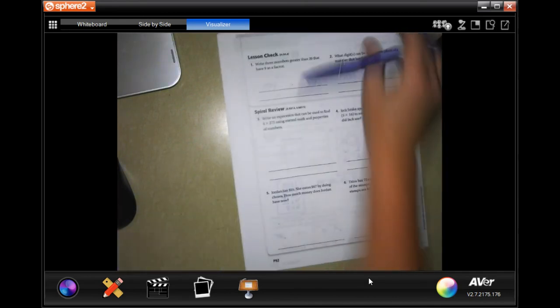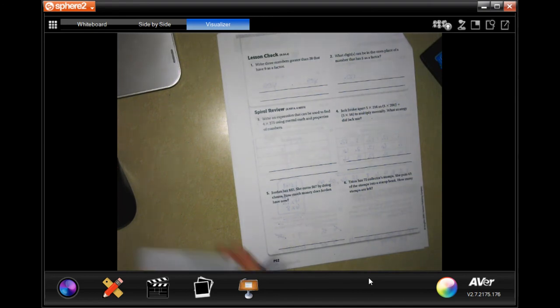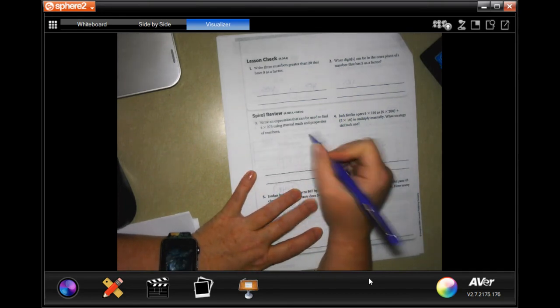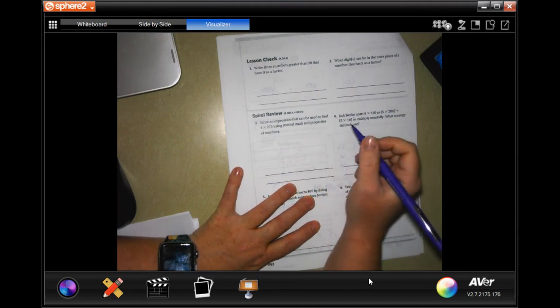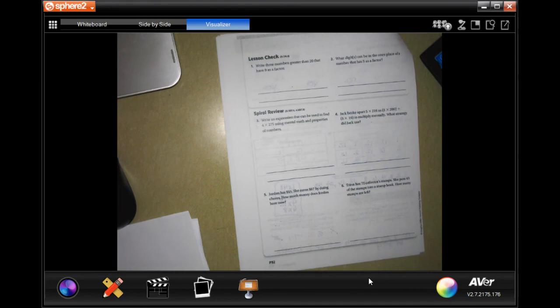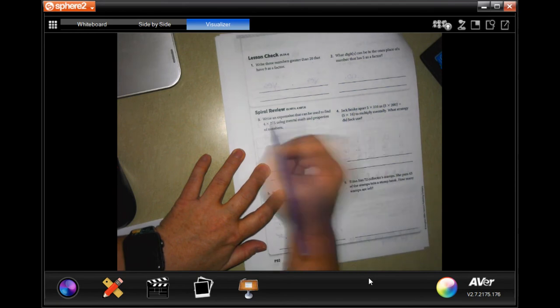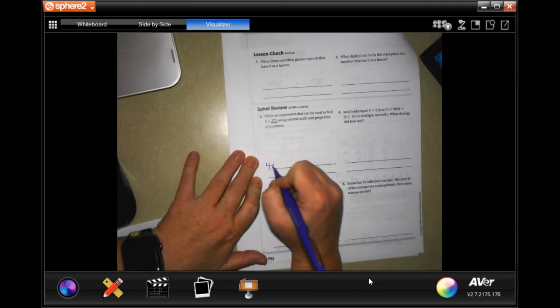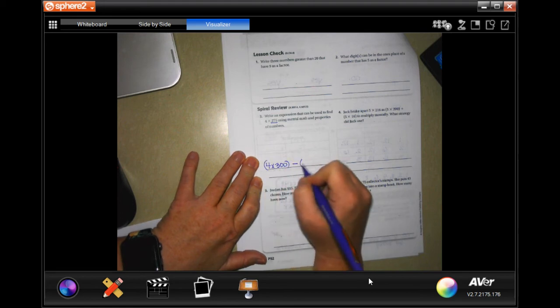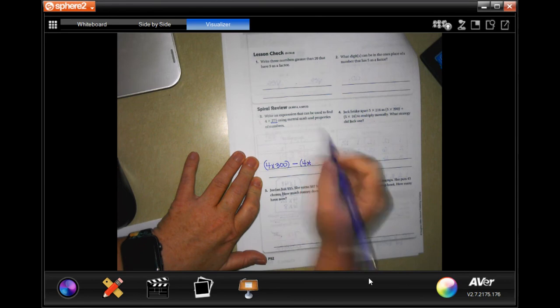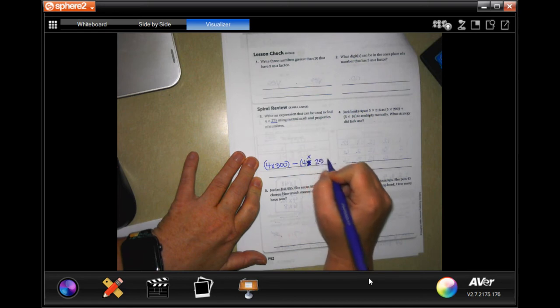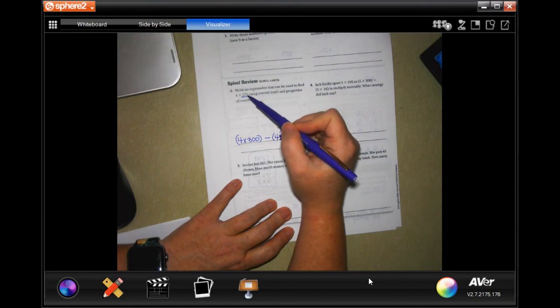And we're going to go ahead and do the Spire Review. The Spire Review says to write an expression that can be used to find four times 275 using mental math and properties of the numbers. So, you could do, let's see. So, 275 is about 300. So, I could do four times 300. And then, I could minus that four times the 25. So, 25, sorry, we're going to, that's a multiplication sign. So, 25. Because there's 25 to get to the next 100.